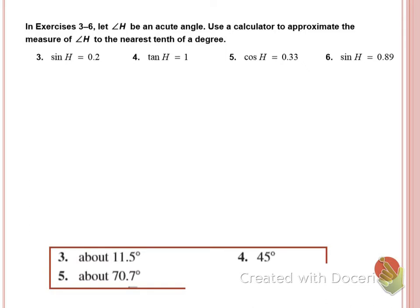And then sine of angle H equals 0.89. So shift sine of 0.89. And we get? 62.9. Good.